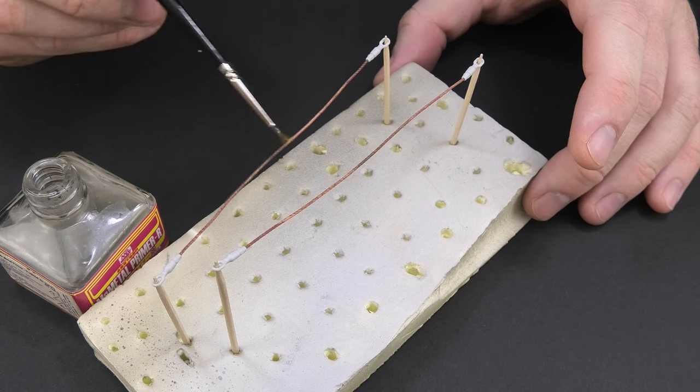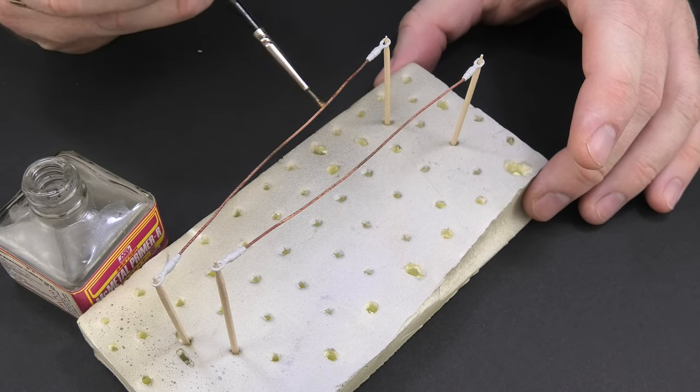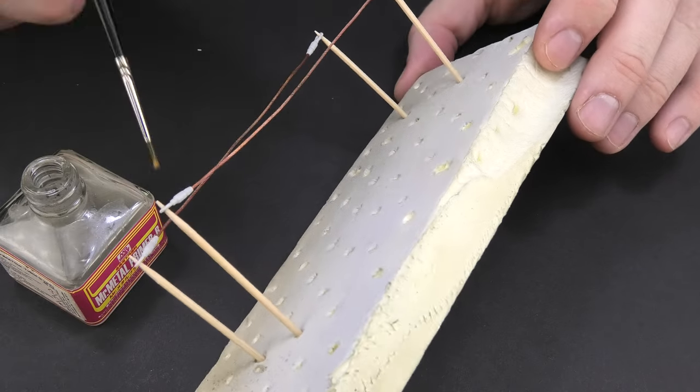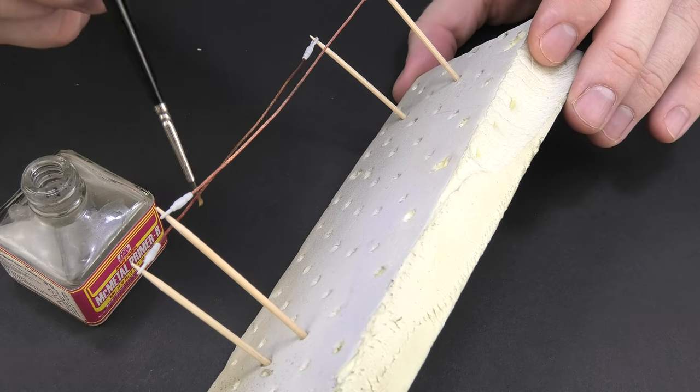Before I cover the ropes with paint I put a metal primer on them for better adhesion. One coat is enough but you have to do it fairly carefully.